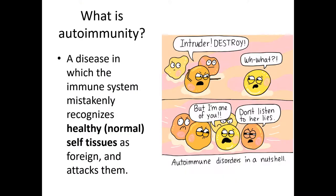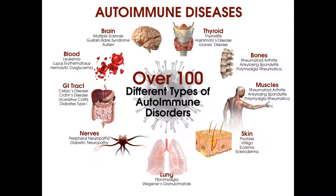Moving on from allergies to autoimmunity. Autoimmunity means self-immunity — your immune system makes a mistake and begins to attack some of your own normal self-tissues. This is more common in women than in men for reasons we don't understand. We haven't figured out a way to reprogram the immune system yet, but research is ongoing. There are over a hundred different kinds of autoimmune disorders; we'll focus on just a small sampling.